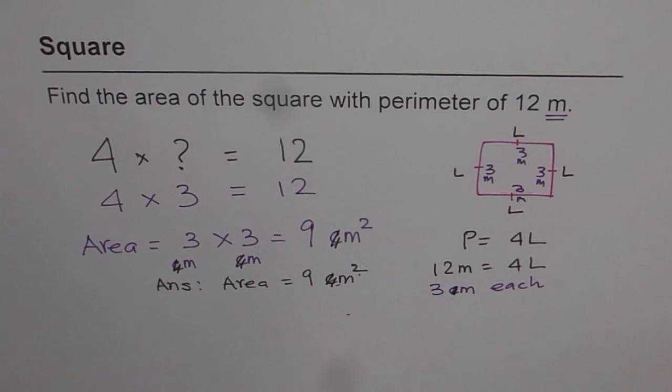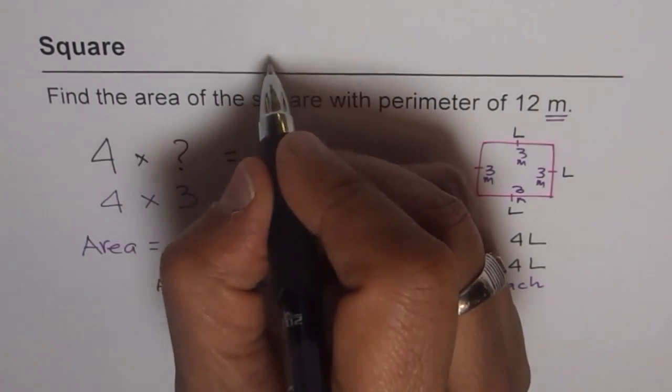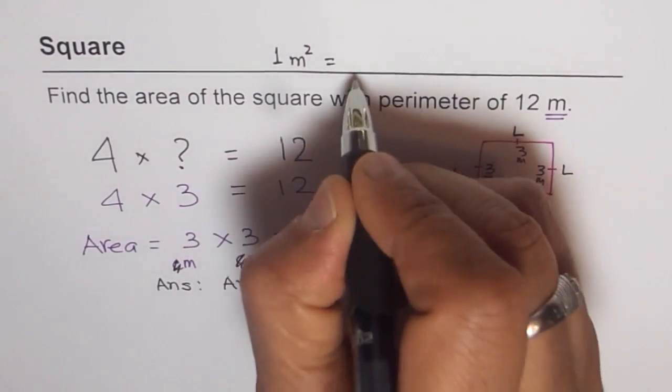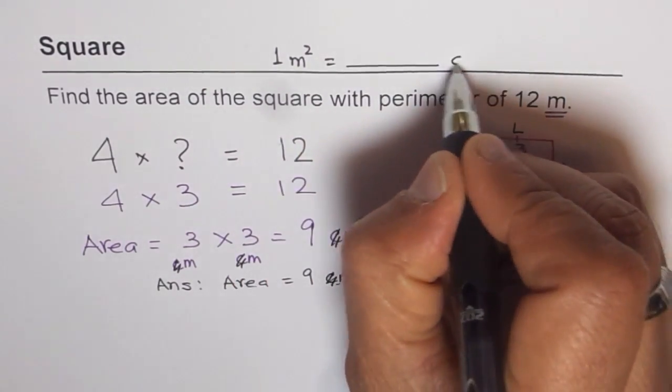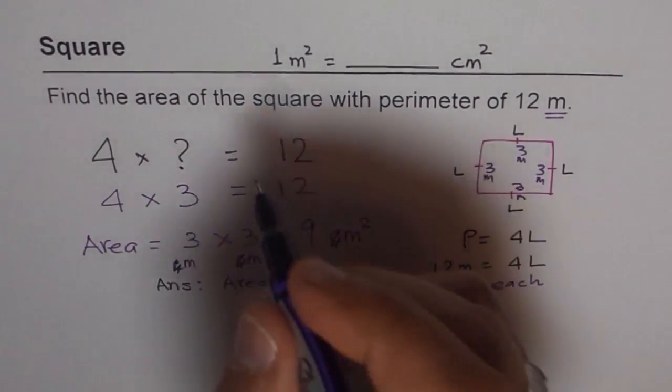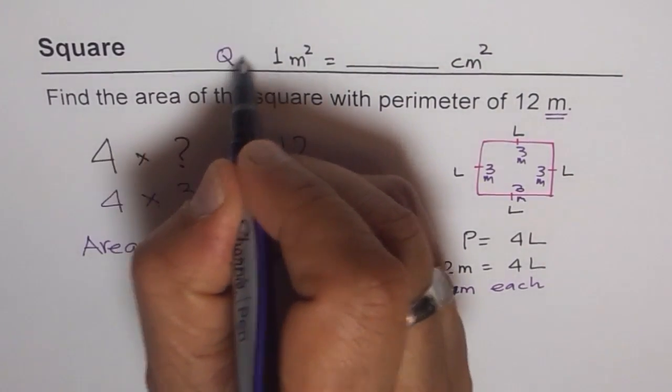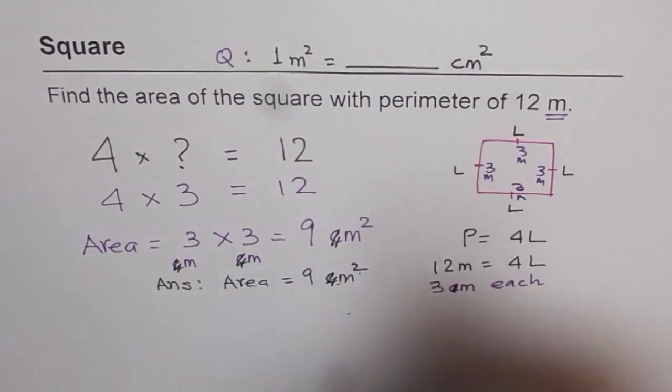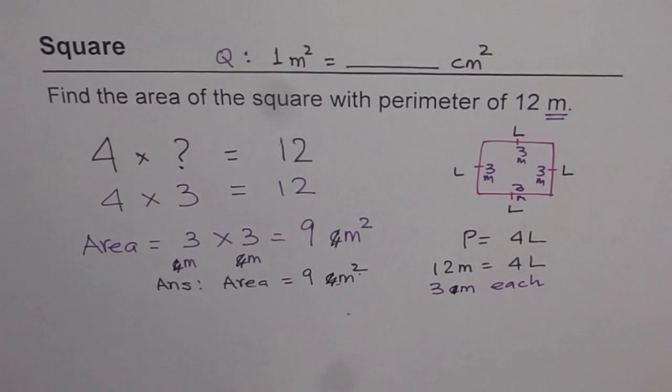Now, one question for you. Can you tell me, in 1 meter square, how many centimeters squared do we have? So that is the question for you. It is a bonus question. So the question is, 1 meter square is equal to how many centimeters square? Think about it and let me know. Thank you and all the best.